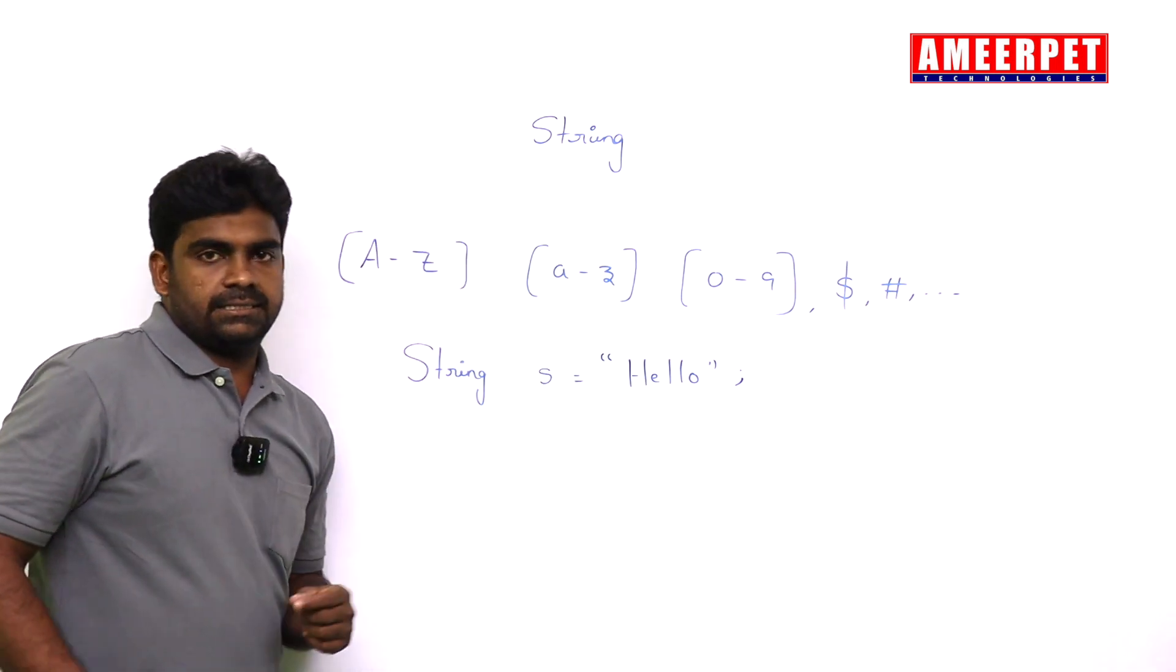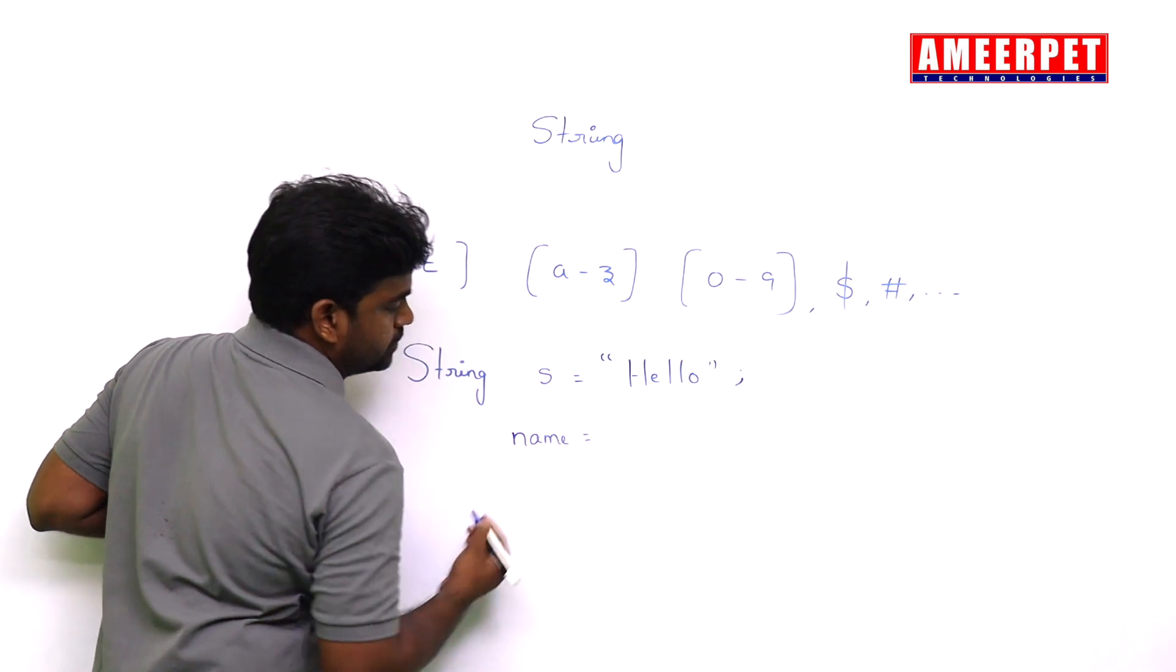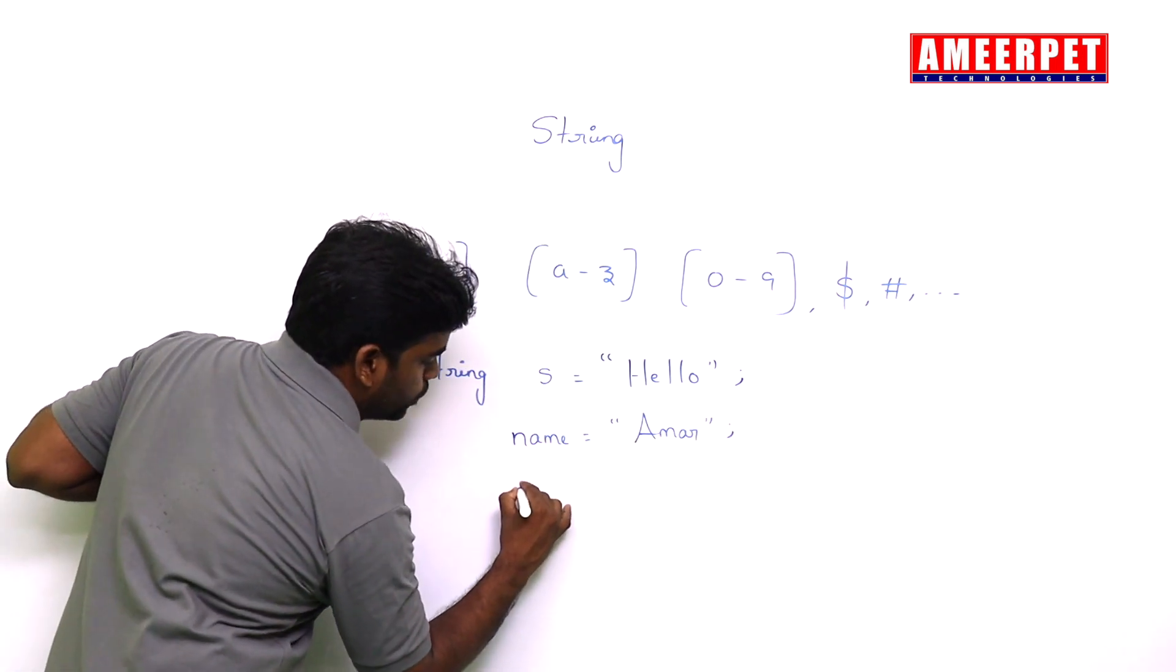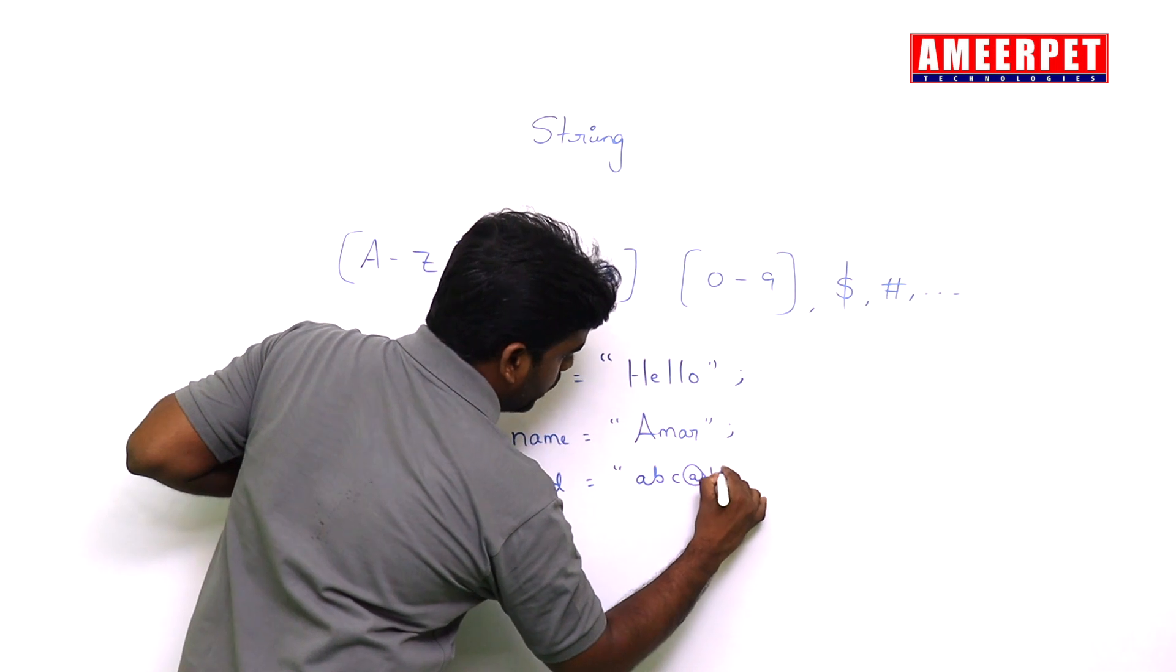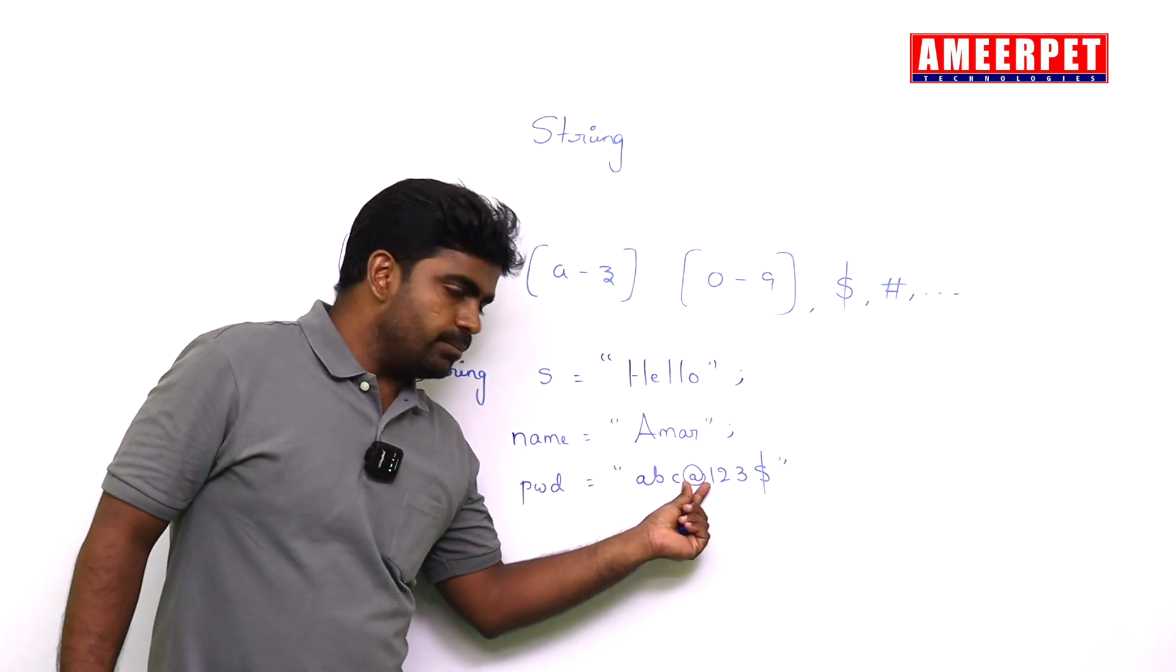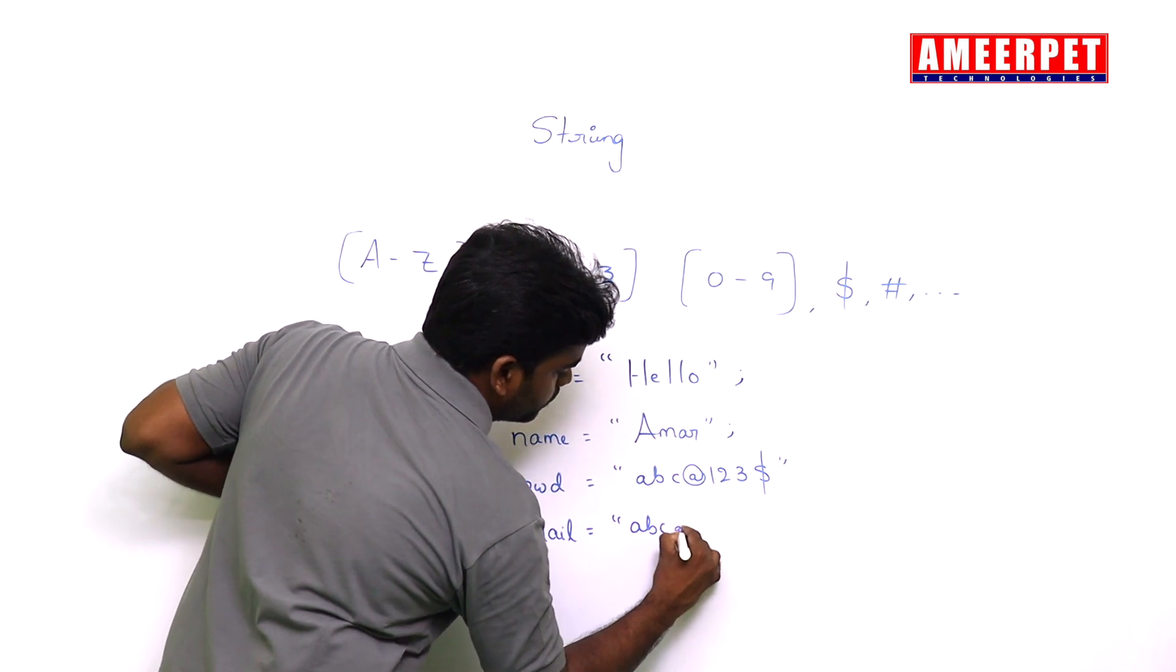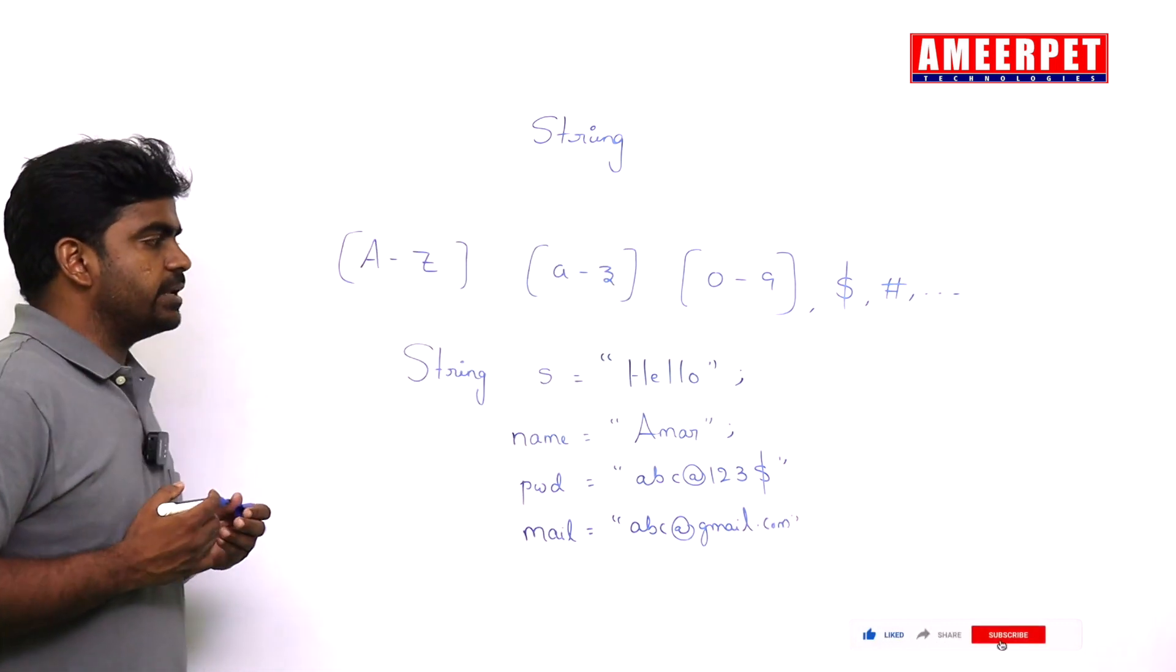Not only characters, so mostly when we go with all characters to represent the string. Name equals to, I am just specifying the name. For example, I just want to store a password equal to like abc at the rate one two three some dollar. Password includes everything - alphabets, symbols, digits. I just want to represent a mail id, something like abc at the rate gmail.com. To represent all these things, we are using strings.